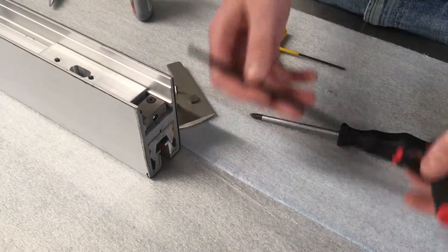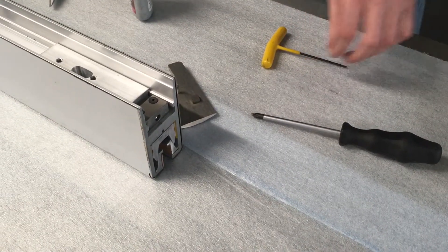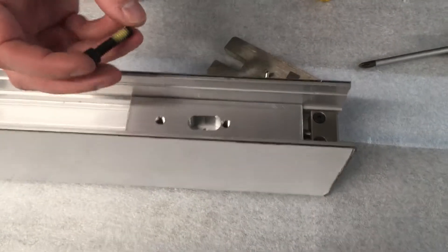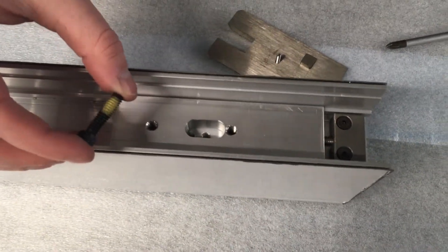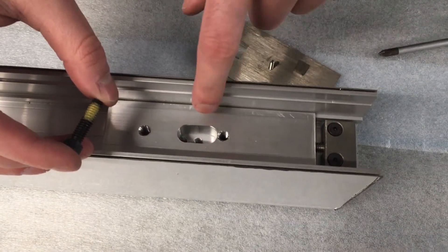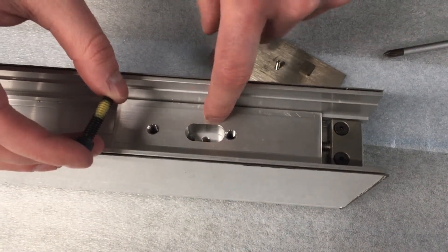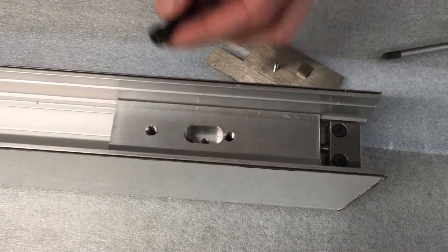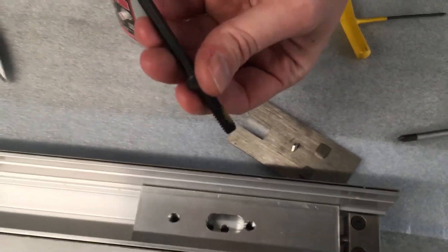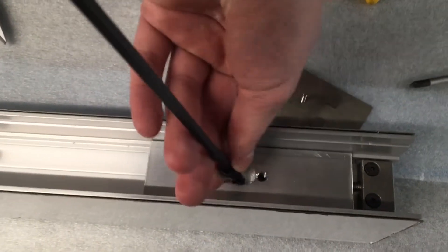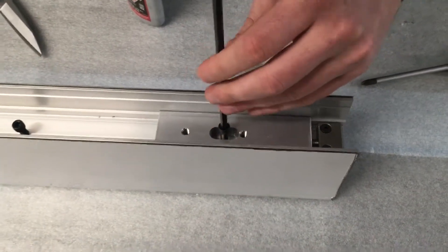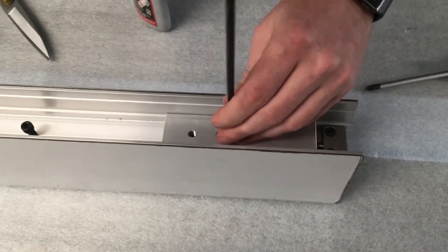Once that's centered, the next step is installing the 1/4-20 pusher screw into the threaded hole between the PVPL. Use a 3/16 T-handle, and it already has pre-applied Loctite so no additional Loctite is needed. Just start this fastener in the threaded hole.